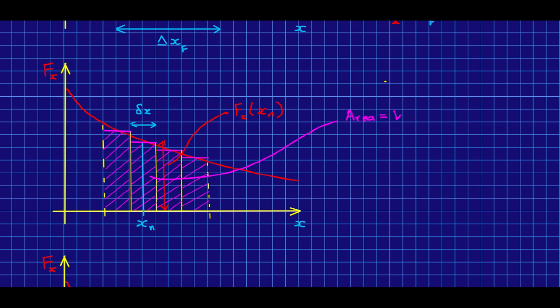then I could say that the area of this rectangle that I've selected here, which I could call the nth work, is simply that force times that width. And now the total work is approximately just the sum of all of the works calculated by adding up the areas of these rectangles.